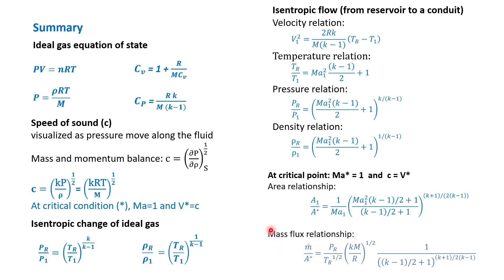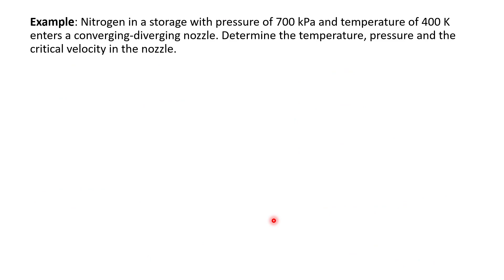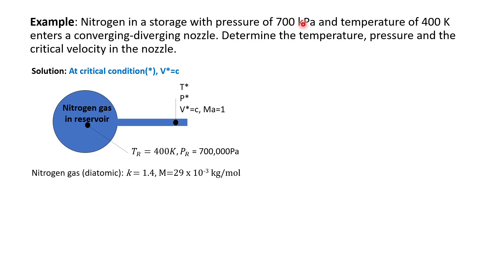This is the first example. Nitrogen in a storage tank with a pressure of 700 kilopascal and temperature of 400 Kelvin enters a converging-diverging nozzle. Determine the temperature, pressure, and critical velocity in the nozzle. A converging-diverging nozzle tells us the flow is isentropic, and the 700 kilopascal is the condition at the reservoir.